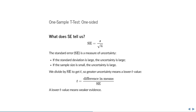We calculate the t-value by dividing by the standard error, so that means that the greater the uncertainty, the lower the t-value, and the weaker our evidence against the null hypothesis. And if we have a very large sample size, or if the standard deviation is simply small, then we have less uncertainty and we have stronger evidence against the null hypothesis.